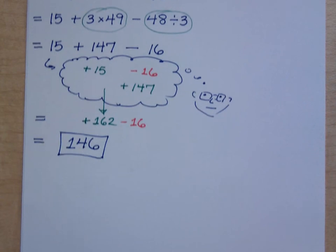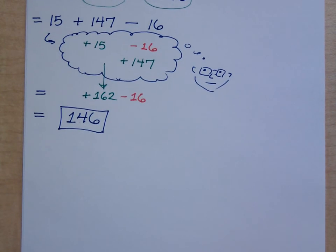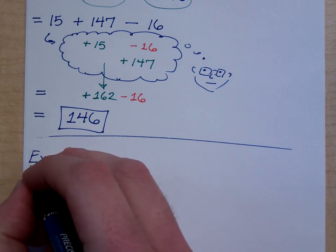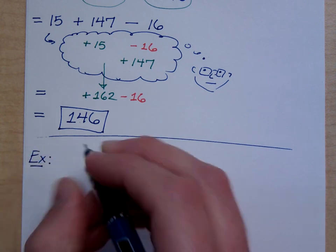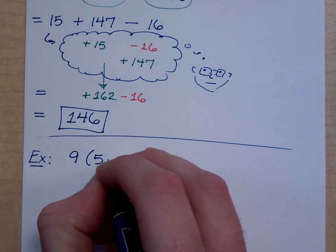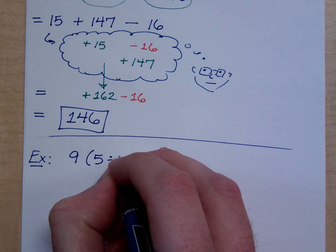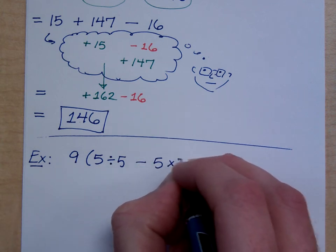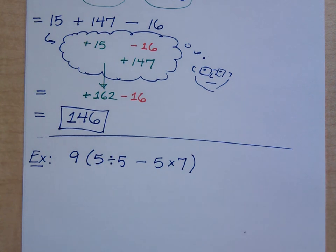It's when things start having grouping symbols that it gets to be a little bit more difficult. Grouping symbols can come in the form of parentheses, which are the most common form. But they may also take the form of absolute value, where you have to do what's inside the absolute value first, then you take the absolute value. There's an order that we have to follow.